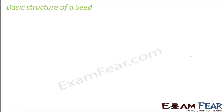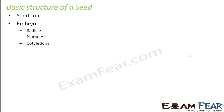Now let us look at the basic structure of a seed — what the seed is made up of. Seeds of different plants vary in shape, size, nature of the seed coat, number of seed leaves present, and quantity of the tissue present inside the seed. The main important parts of a seed are the seed coat and the embryo. Now inside the embryo you have the radicle, plumule, and cotyledons.